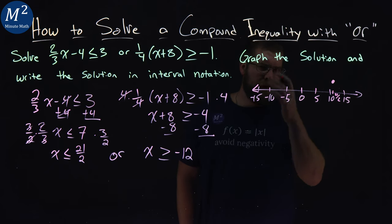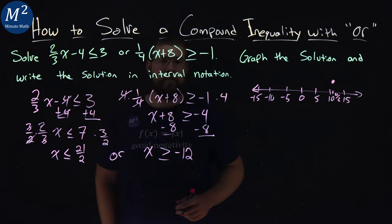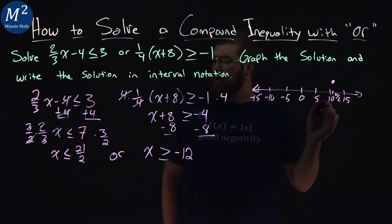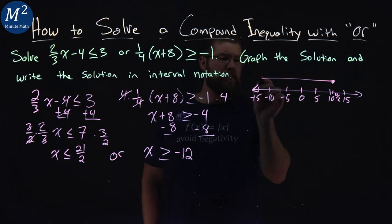It's not to scale, but I think you get it. Closed circle means it can equal the x value, or equal to 21 over 2. And so, x is less than that. Our arrow goes to the left.